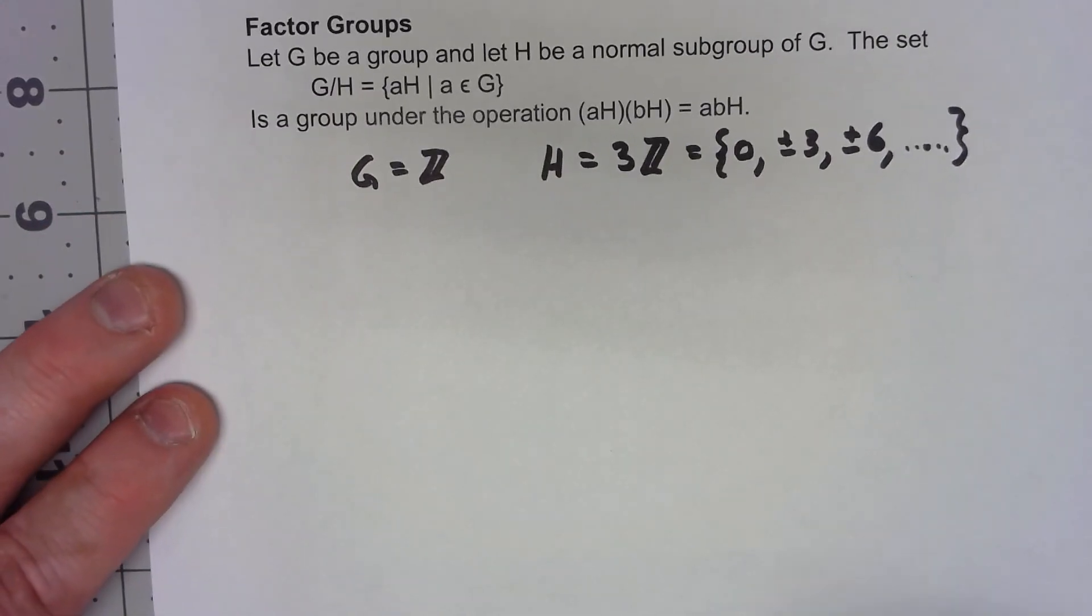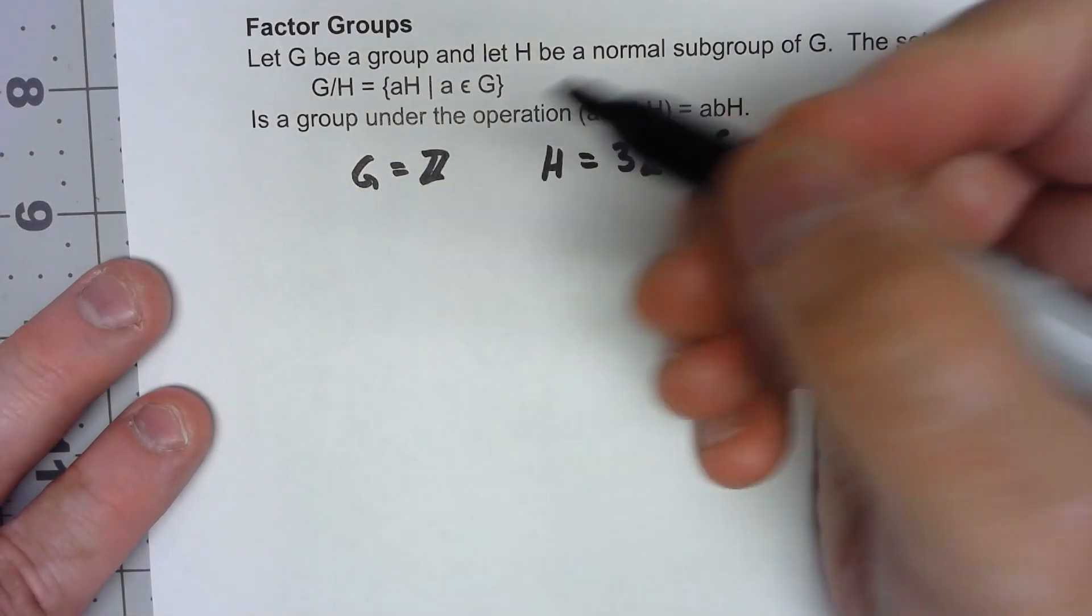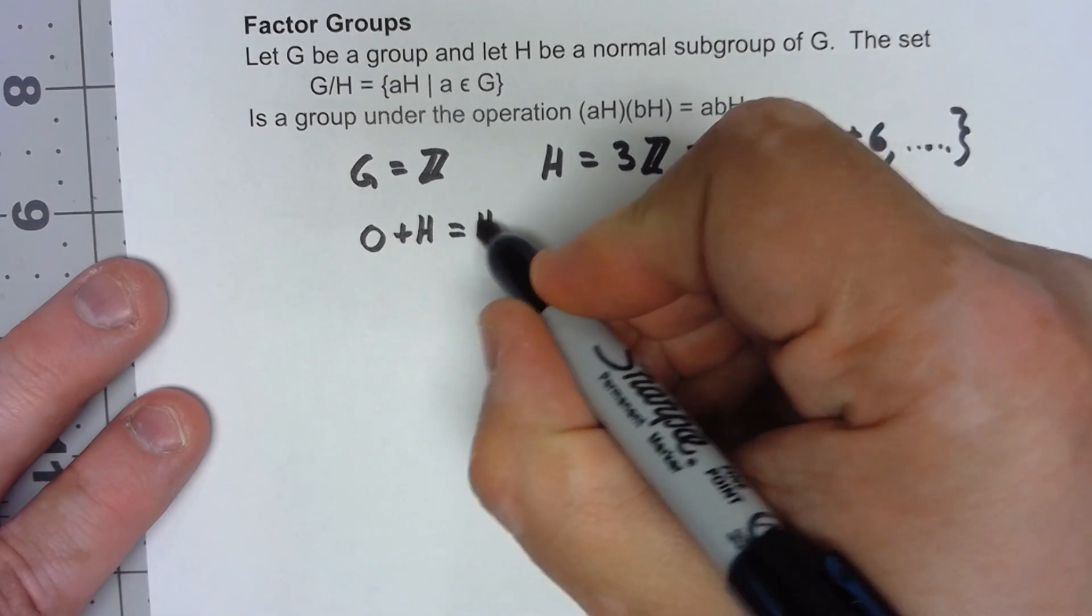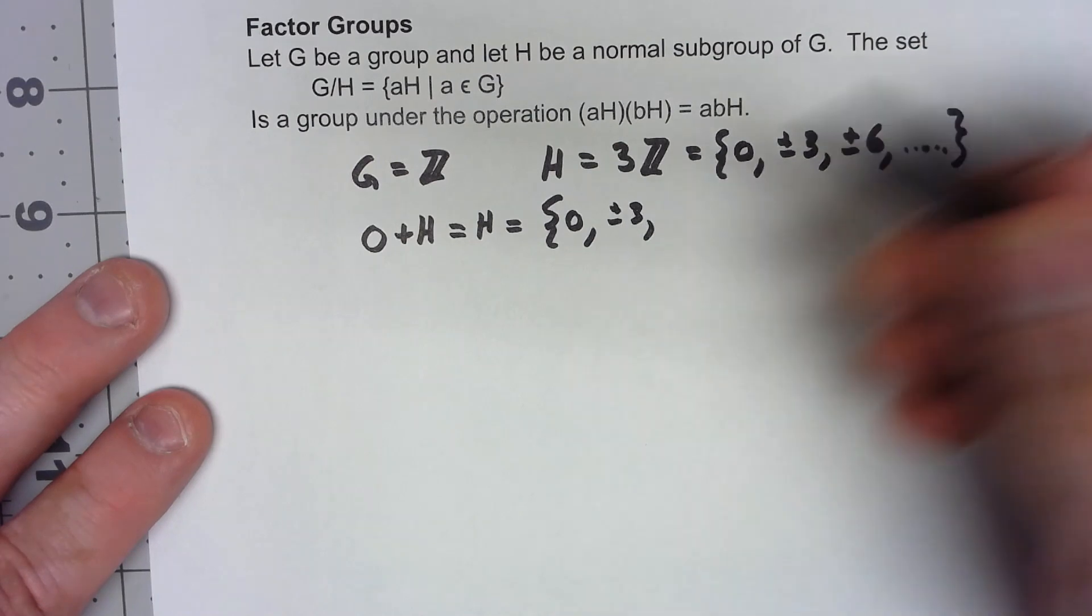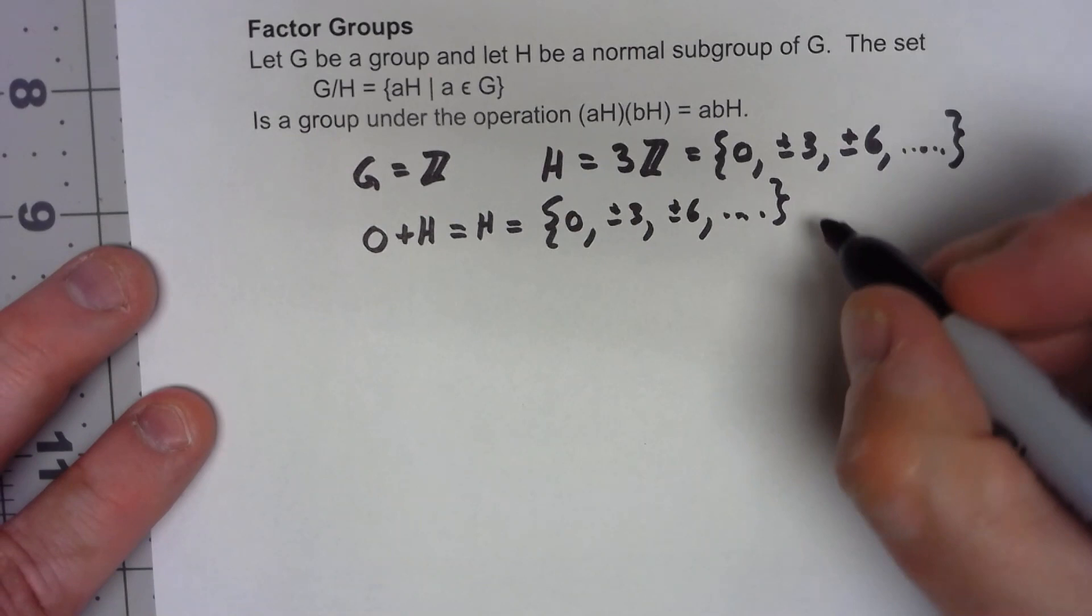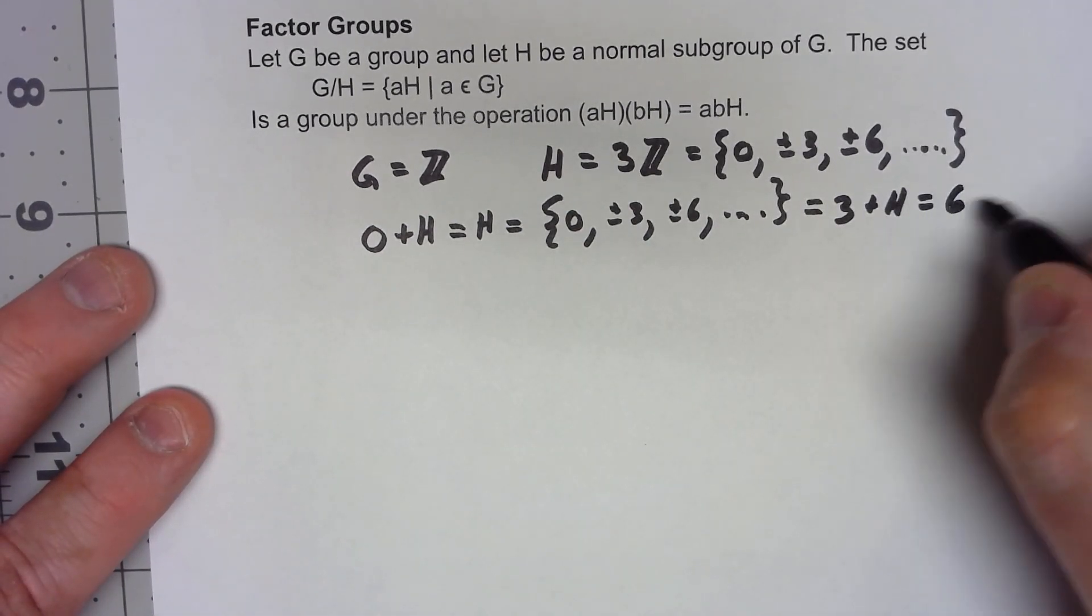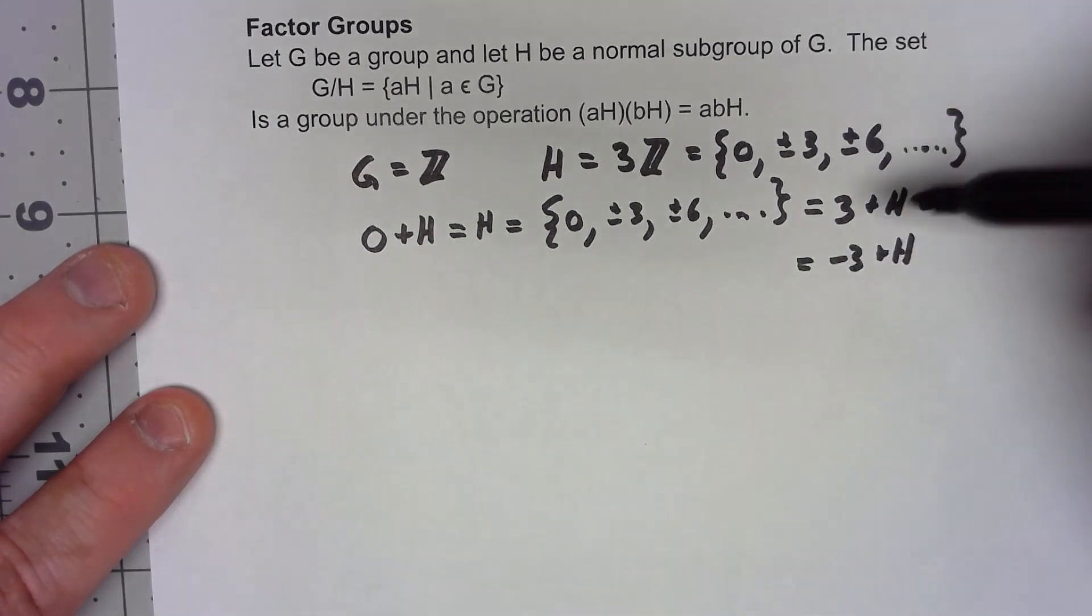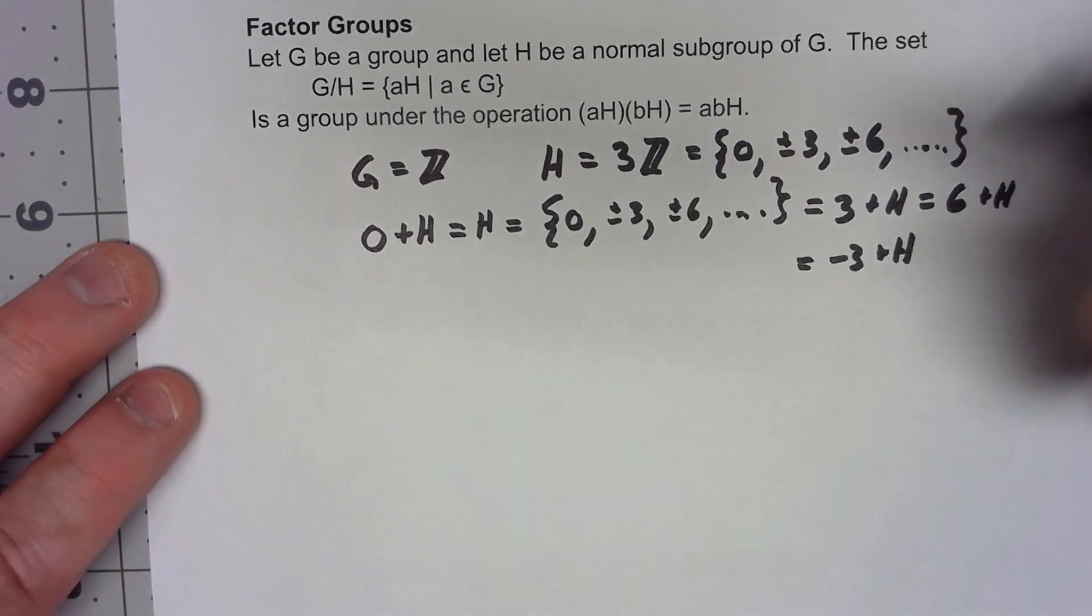Okay, so what are my cosets here? Well, we have 0+H or just H, which is 0, plus or minus 3, plus or minus 6, and so on. That's also going to equal 3+H, it's going to equal 6+H, it's going to equal -3+H. Anytime I'm adding an element that's inside H to that subgroup, I'm going to get that subgroup.